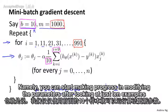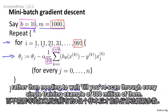So that's why mini-batch gradient descent can be faster than batch gradient descent. Namely, you can start making progress in modifying the parameters after looking at just 10 examples rather than needing to wait till you've scanned through every single training example of 300 million of them.